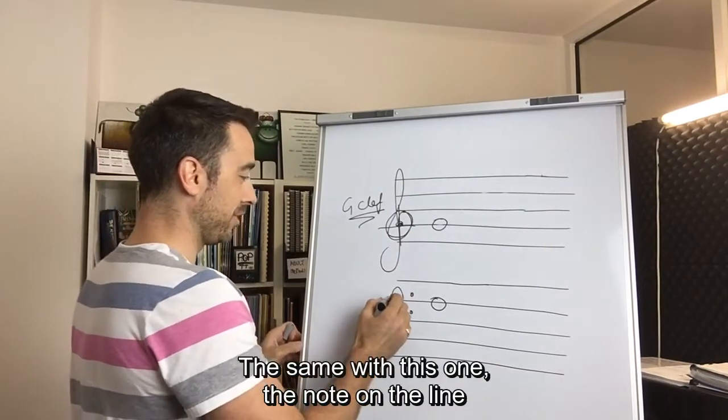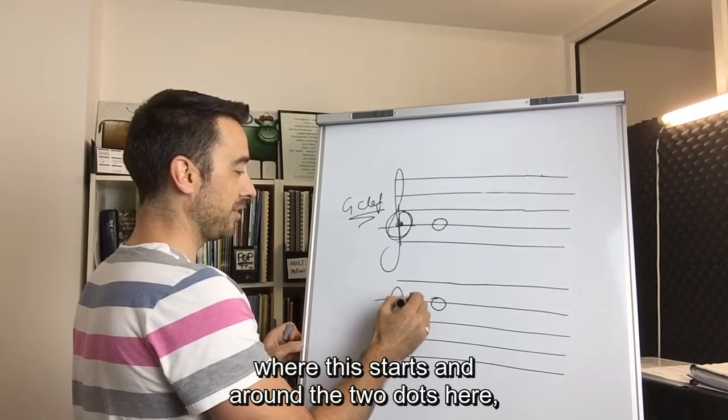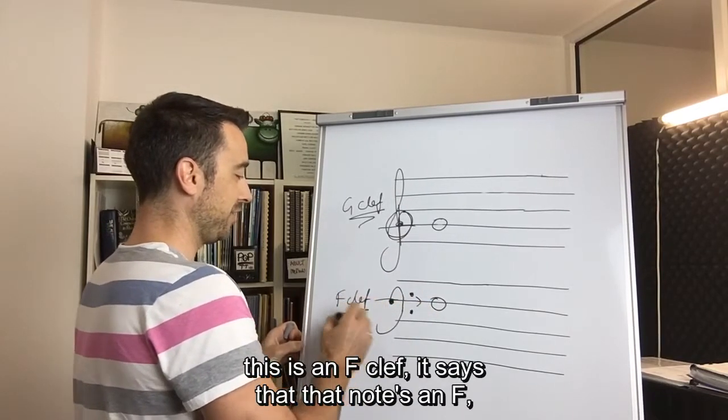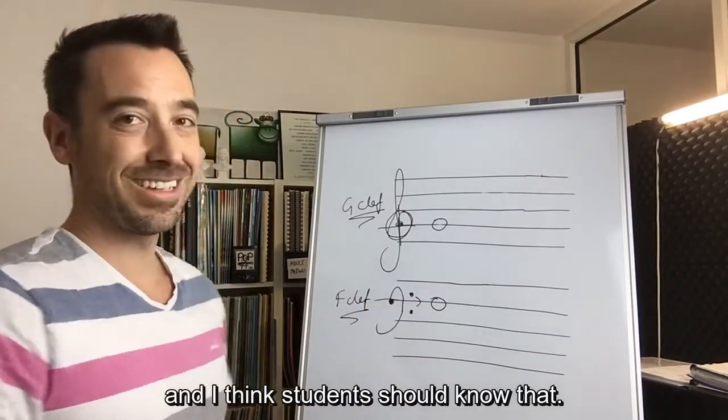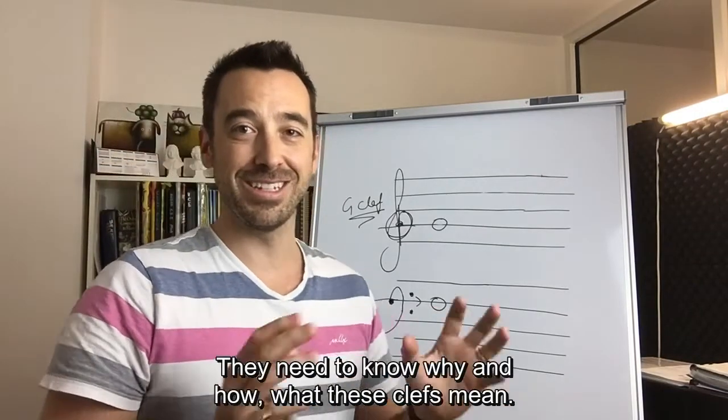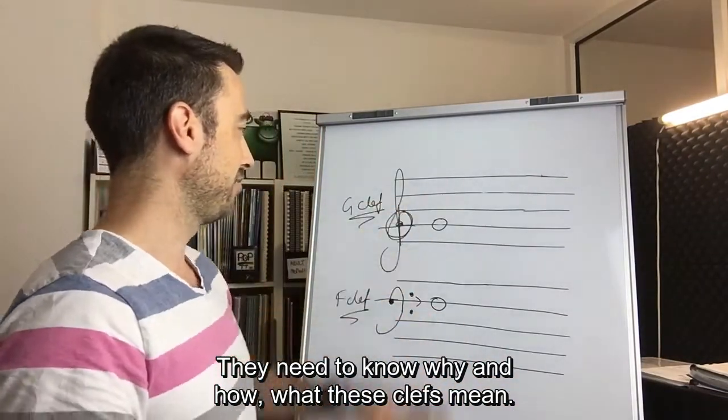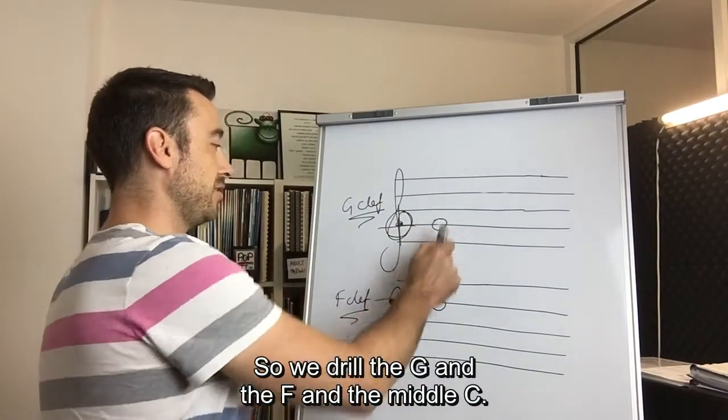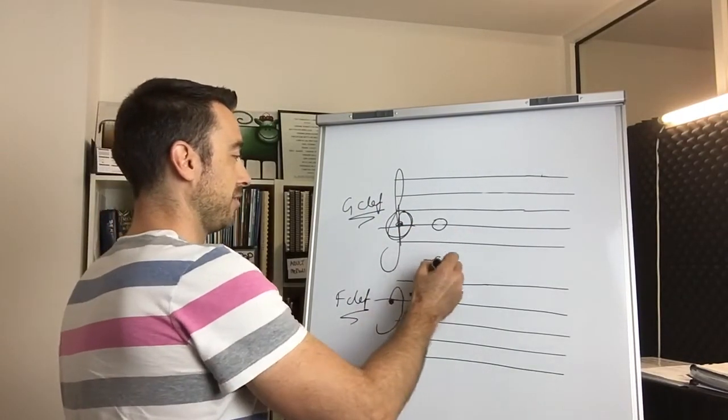The same with this one. The note on the line where this starts and around the two dots here, this is an F clef. It says that that note's an F. And I think students should know that. They need to know why and how, what these clefs mean, right? So we drill the G and the F and the middle C.